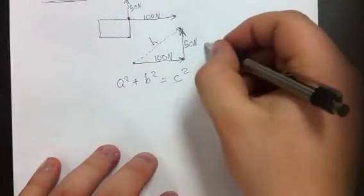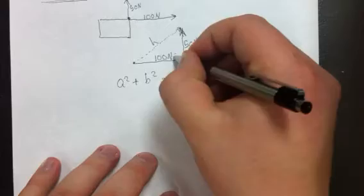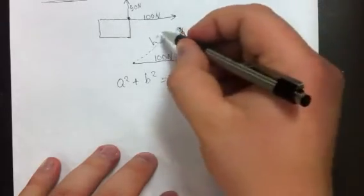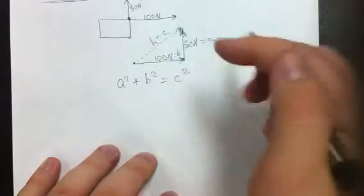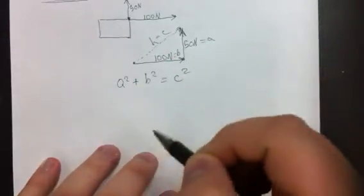In this case, our A, we'll call this side, our B is this side, and our C is this side. So, let's input these values into this formula to find the magnitude of this vector.